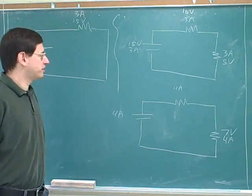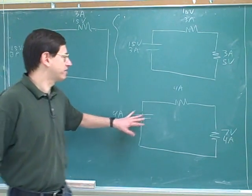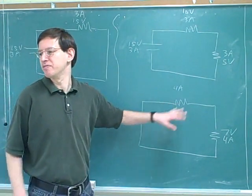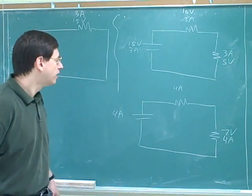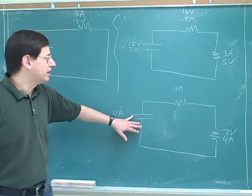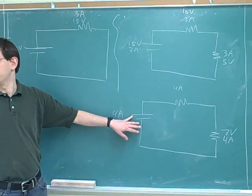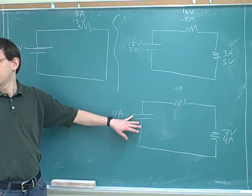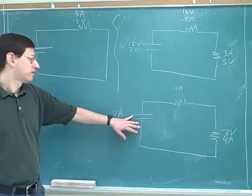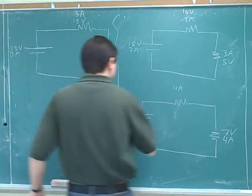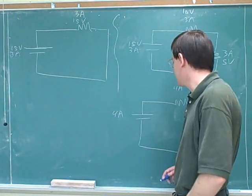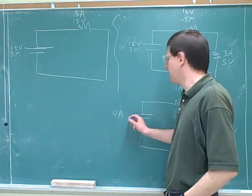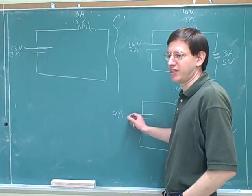I was trying to trick you into saying that this would be 7 volts and this would be 7 volts. But you didn't fall for that. Is this going to be bigger or smaller than 7 volts? This has to be bigger, because this is the total height gain.